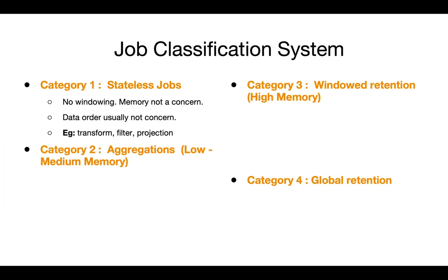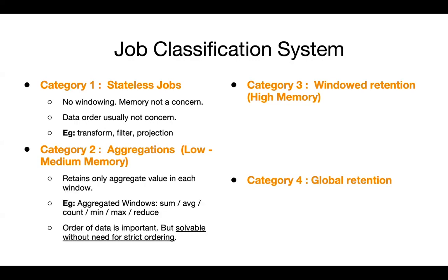The first part of the architecture is the job classification system. Category one is stateless jobs — just filters, transforms, projections — no state involved, data order is not a concern, and these are the easiest to handle. Category two is aggregation jobs: sum, average, min, max, reduce. Here you're only holding on to the aggregate value in the window, not all the incoming data, so your memory footprint is low to medium. These are stateful, and data order is important — but the key insight is this problem can be solved without the need for strict ordering.